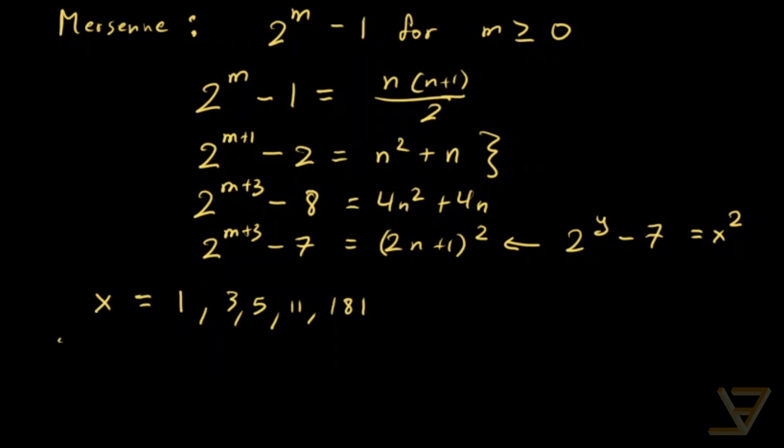So that means 2n plus 1 is equal to this. And as a result, n is equal to 0, 1, 2, 5, and 90.